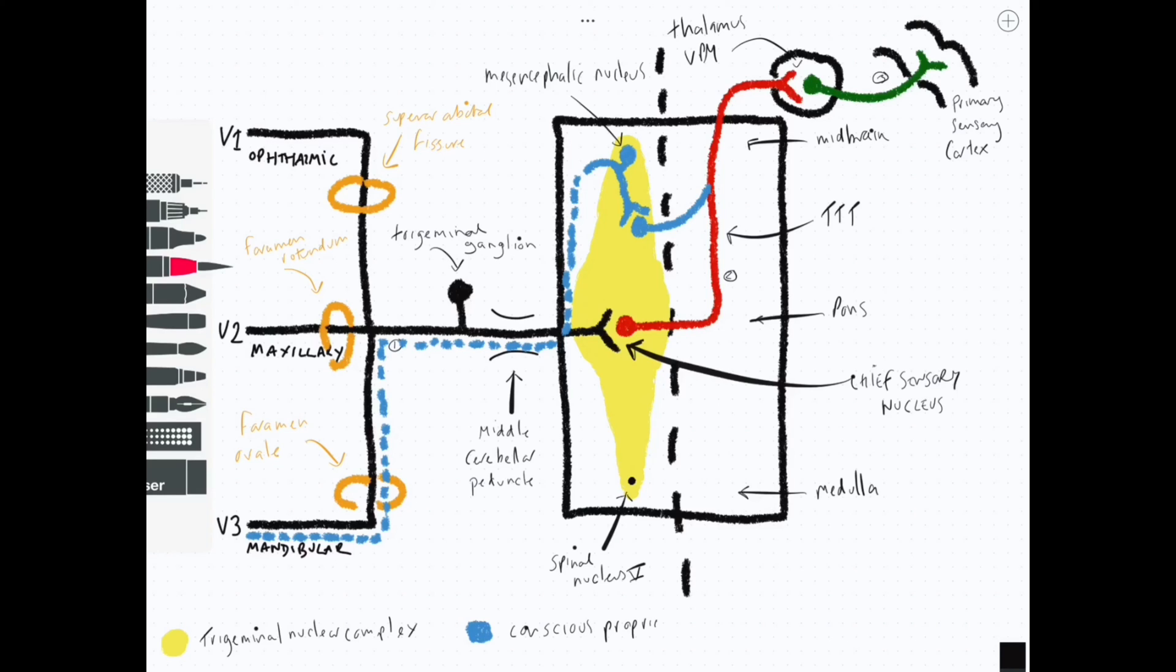Some of the information will carry on and will ramify onto neurons associated with the motor nucleus. This is for the stretch reflex associated with the jaw jerk. Some of the information here, which is of non-conscious proprioceptive type, will also communicate with the ipsilateral cerebellum as well, and that's not drawn on here as that would overcomplicate the diagram.